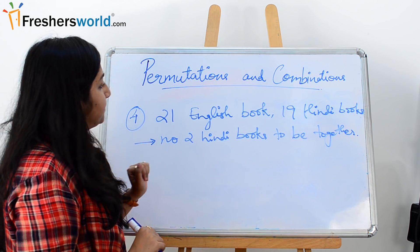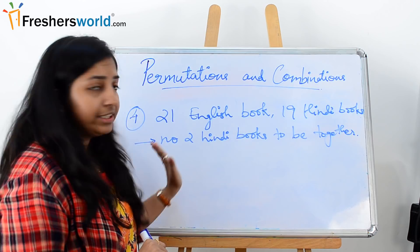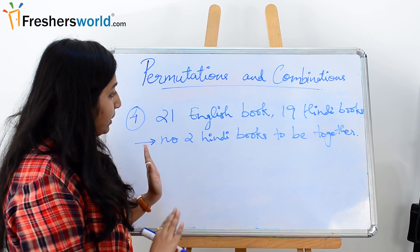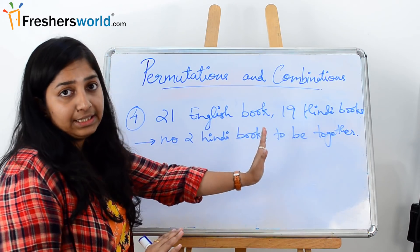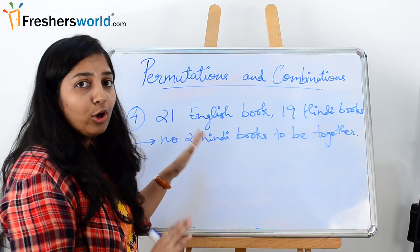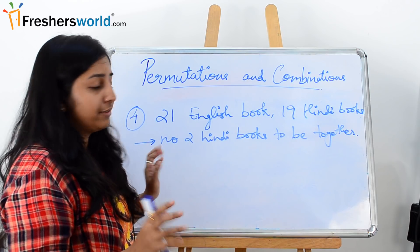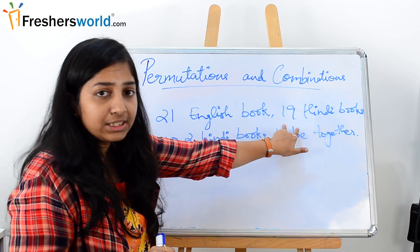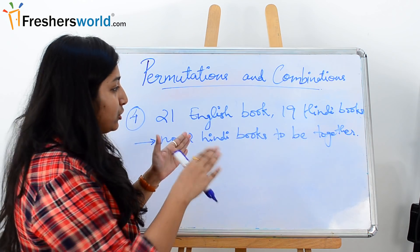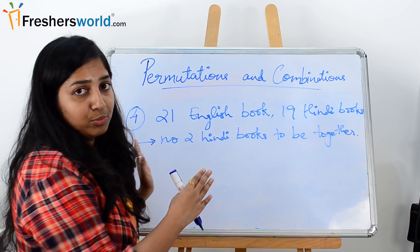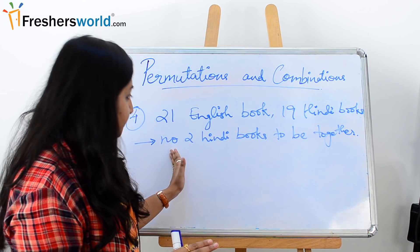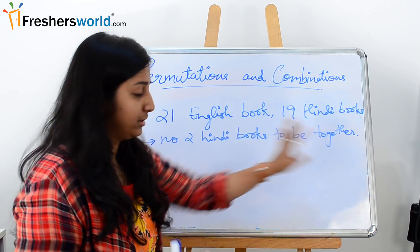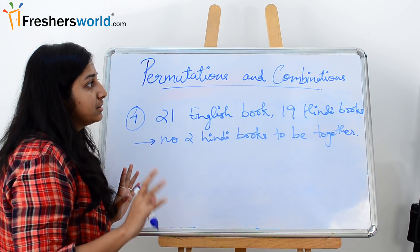Let's move on to our fourth question now. So the fourth question: see here, we have 21 English books and 19 Hindi books. So the question is, how can we arrange these 21 English and 19 Hindi books in a row of a shelf, for library shelf, in such a way that no two of the Hindi books are together? It should always be separated by an English book. That is the condition here, that no two Hindi books can be together.